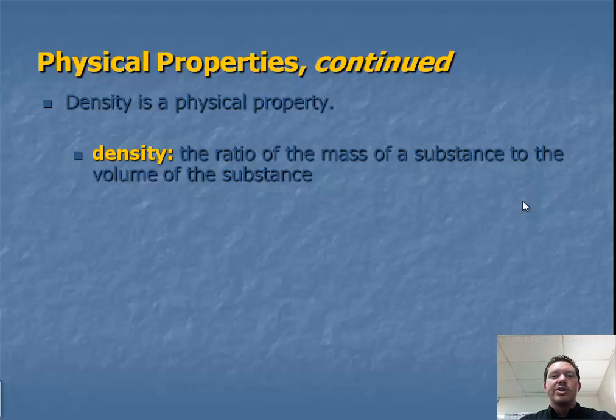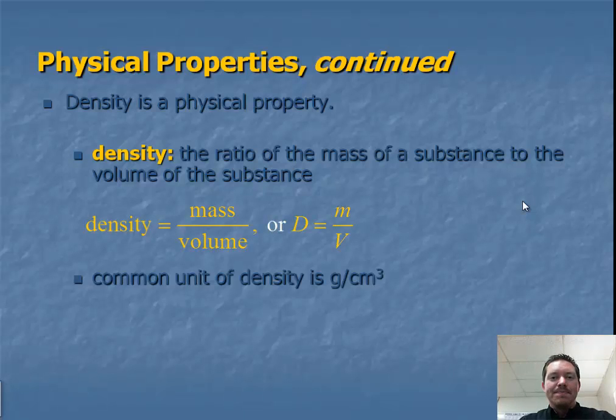Just to define these terms, density is the ratio of mass of a substance to how much volume that substance occupies. And we use the formula, density equals mass divided by volume. And commonly, the unit of density is grams per cubic centimeter.